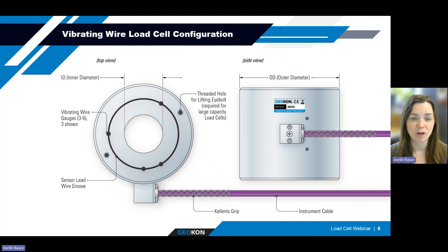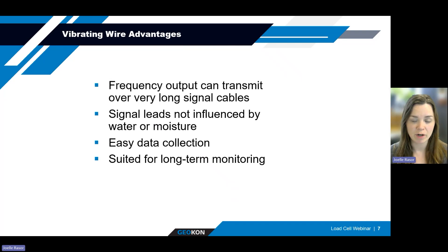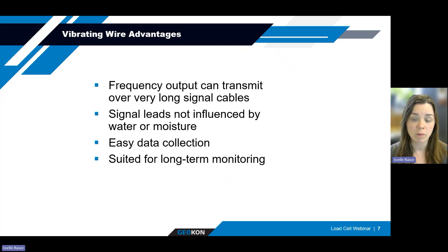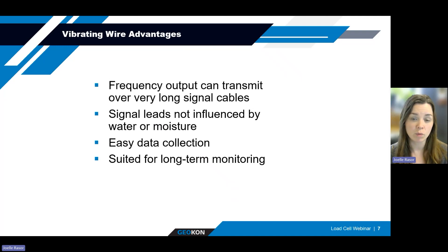Looking at some of the advantages of vibrating wire technology: the frequency output of the vibrating wire can transmit over very long cable lengths without any signal degradation. We've successfully tested our vibrating wire instruments with cable lengths in excess of 3,000 meters without any effect on the output of the gauge. Vibrating wire technology has been available on the market for several decades and has a wide variety of options for data collection, from manual readout boxes all the way through cloud-based data logging systems. It has proven stability over long-term monitoring projects and the ability to continue operating for decades when properly installed and maintained. Vibrating wire load cells are best used for static load monitoring, as dynamic use may not be economically feasible depending on the quantity.